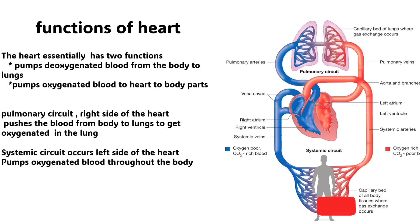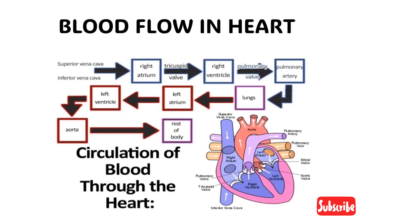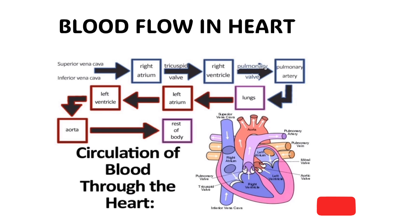Now we are going to see the pattern of blood flow in the heart. Deoxygenated blood from the upper body parts is carried to the right atrium via the superior vena cava, and deoxygenated blood from the lower body parts is carried to the right atrium by the inferior vena cava. From there, it is transferred to the right ventricle through the tricuspid valve, which prevents backflow. From the right ventricle, it moves to the pulmonary artery and then to the lungs.